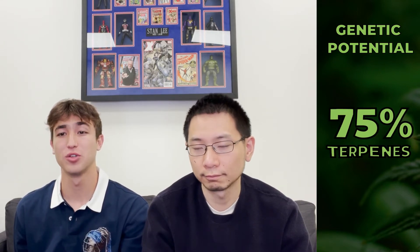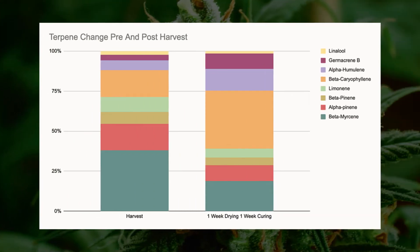We know from our own testing that over 75% of terpenes are lost from the drying process, sometimes much more depending on drying conditions. As drying is a necessary process, it becomes imperative to preserve the remaining terpenes as much as possible. However, it is difficult to determine when the flower has the most terpenes, due to the fact that most flower will experience a significant shift in their terpene profile over time, from more monoterpenes to more sesquiterpenes on a relative basis.